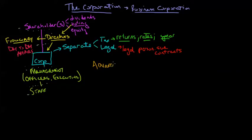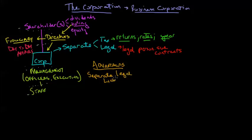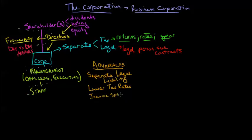Now we look at some advantages and disadvantages to incorporating. One advantage is separate legal liability — if I'm a shareholder of a corporation and my corporation does something that creates liability, that liability stops for the most part at the corporation and generally won't impact my personally owned assets. Generally speaking — though not universally true — corporations pay lower taxes than individuals do. We also have the ability to bring in other shareholders and income split. For example, when incorporating a business, having a spouse as a shareholder means both can generate income out of that corporation.